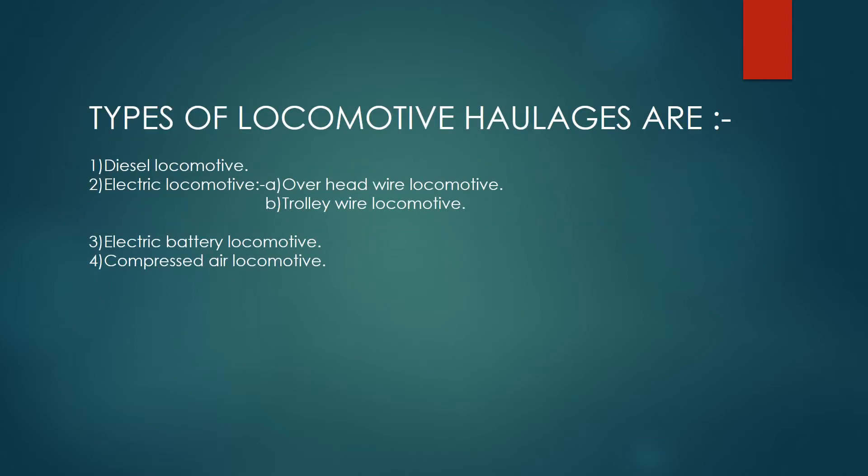Types of locomotive haulages are: 1. Diesel locomotive. 2. Electric locomotive: A. Overhead wire locomotive, B. Trolley wire locomotive. 3. Electric battery locomotive. 4. Compressed air locomotive.